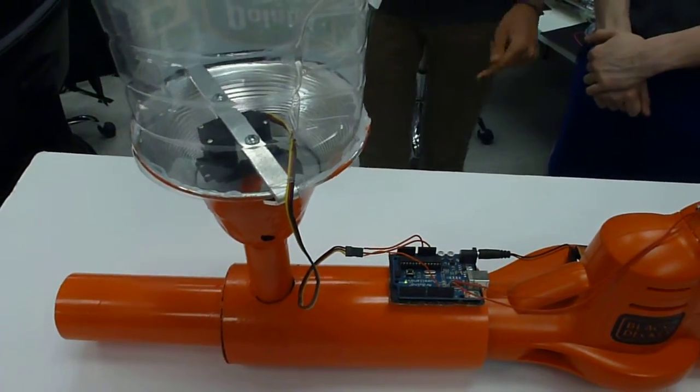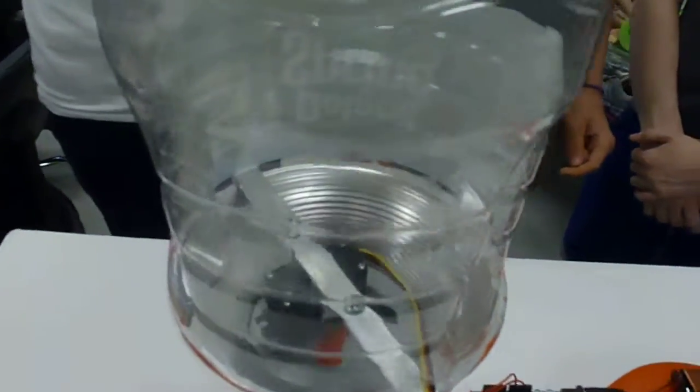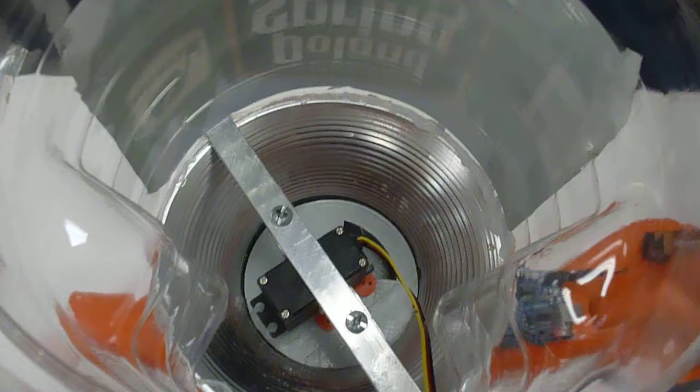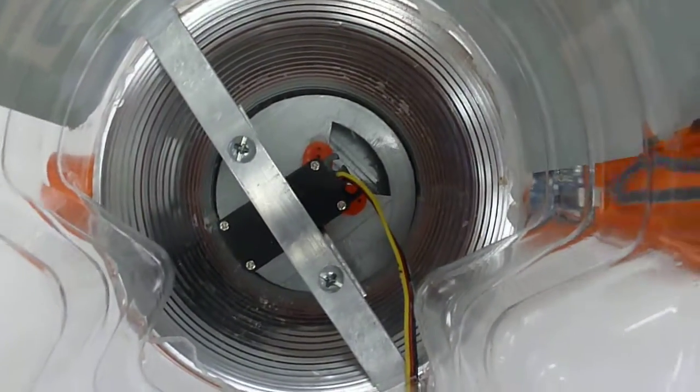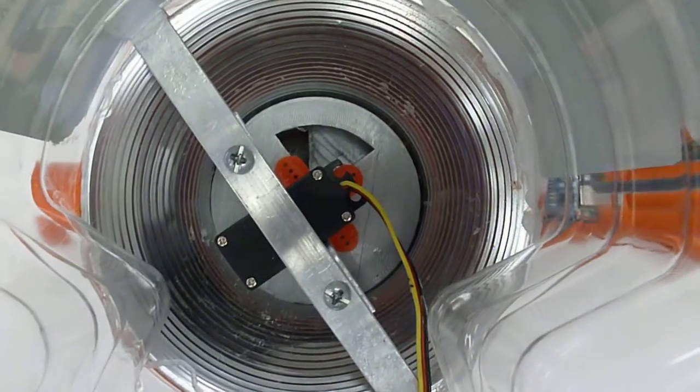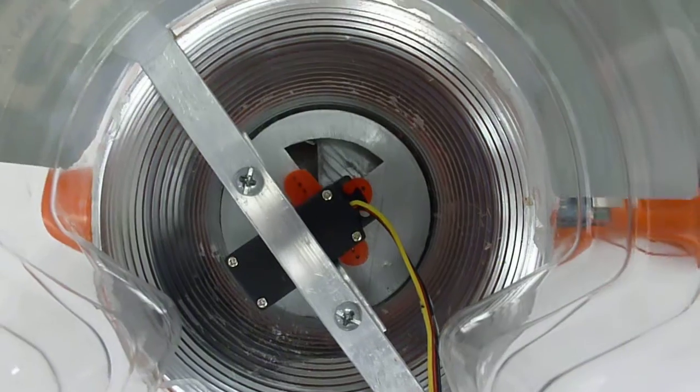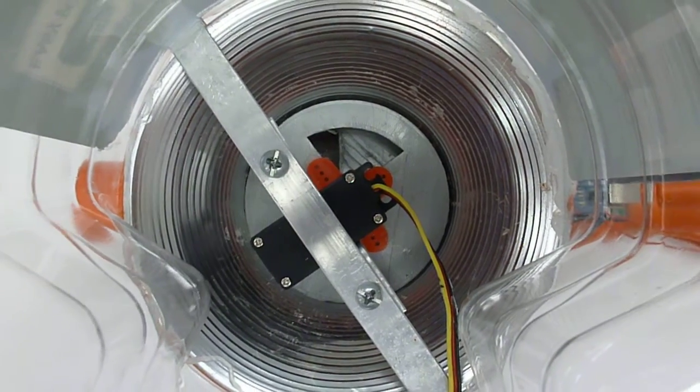The way it works is that you load salt into the main containment unit, which is made out of a water bottle. As you can see, there is a servo down there. Basically, when I press a button, two holes align by the turning of a servo, which allows the salt to pass through into the main tube, which will blow the salt out.